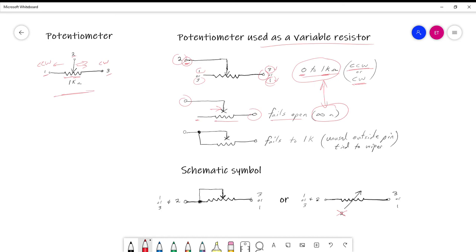And look in this drawing, we still have that failure where the wiper loses contact with the fixed resistance. But look what kind of prevents it from failing open. We've taken what was and still in some ways is our unused outside pin, and we've tied it to the wiper. We've shared that point.